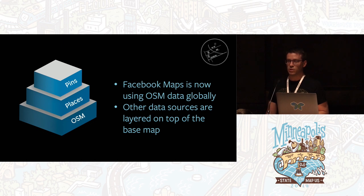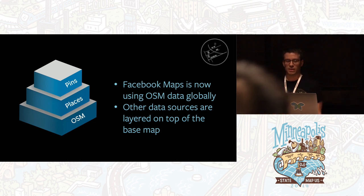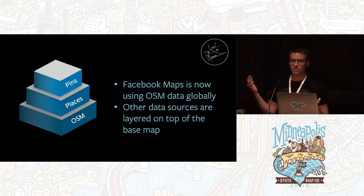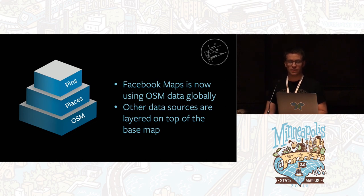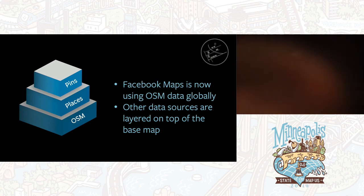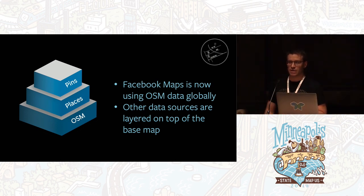We now use OpenStreetMap globally for the base map at Facebook. But on top of that, we have different layers of additional data — things like places data, job listing locations, and pins. So most of the time when you're interacting with a map on Facebook, it's probably using different data than actual OSM.